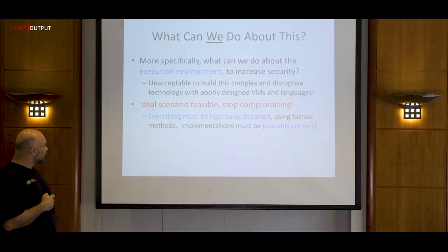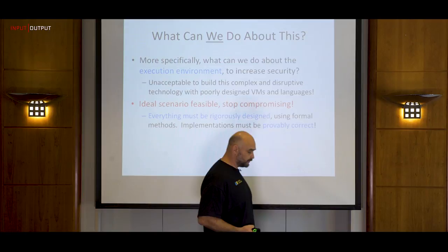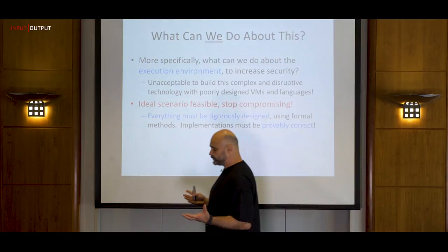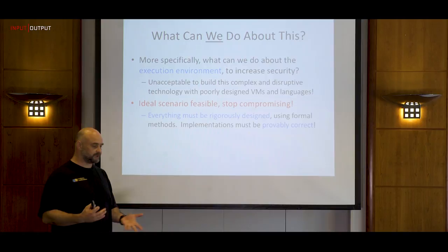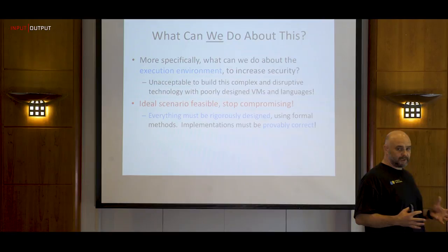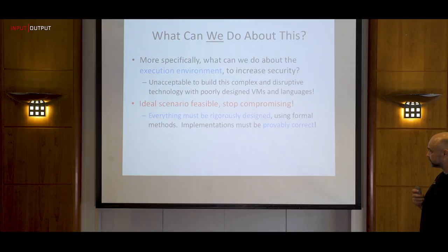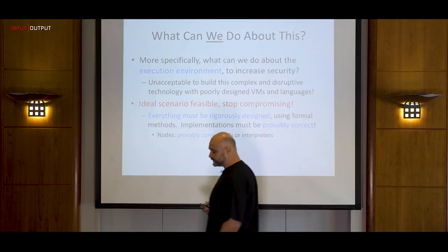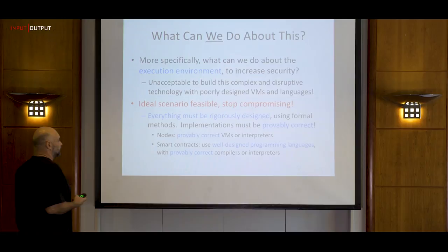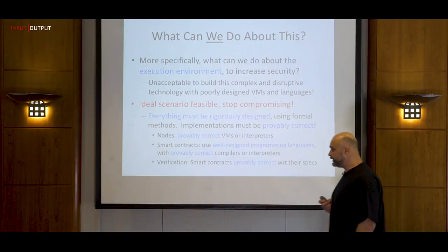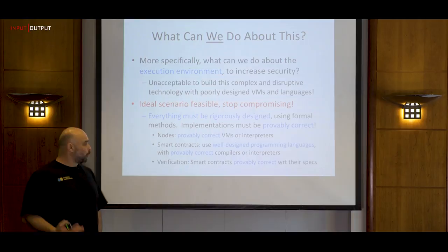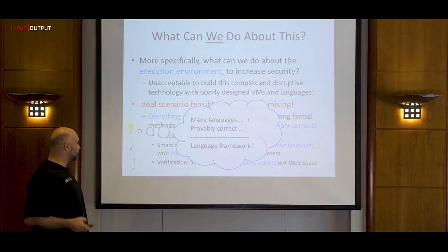I firmly believe the ideal scenario is possible in this space: to use formal methods to rigorously specify and formalize everything — the programming languages, the virtual machines, everything. Then the implementations themselves can be provably correct and must be provably correct. Specifically, we can have provably correct virtual machines or interpreters running in nodes, smart contracts written in well-designed programming languages with provably correct compilers, and all smart contracts on the blockchain could be provably correct with respect to their specifications.